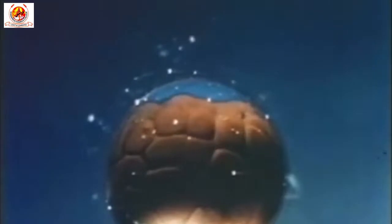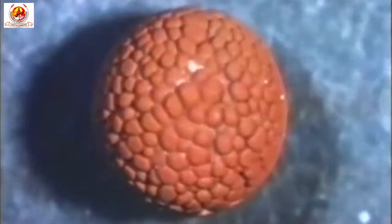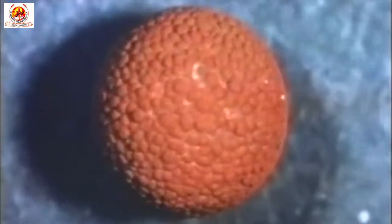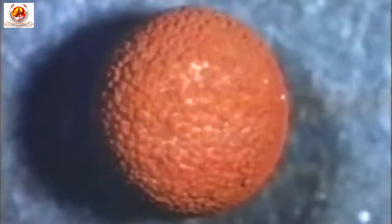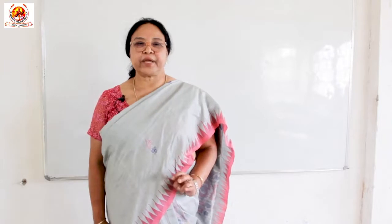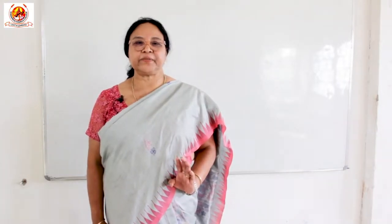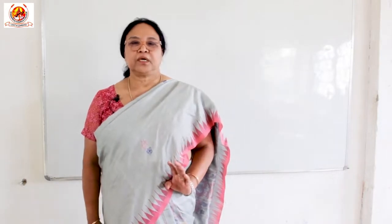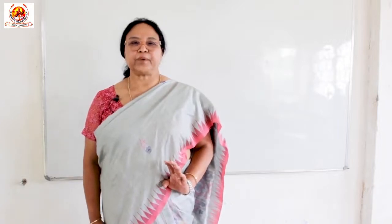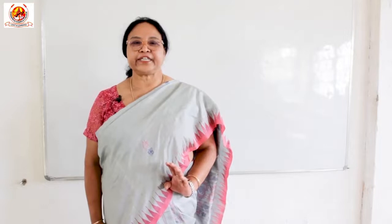Thus, the Blastocoel gradually increases corresponding to the increase in the number of blastomeres, and its early appearance in the frog embryo is debatable till now. The amount of yolk in the vegetal hemisphere has resulted in the obstruction of cleavage and the displacement of all the horizontal cleavage divisions towards the animal pole. The overall result of these developmental modifications is the formation of a blastula with an eccentric Blastocoel.